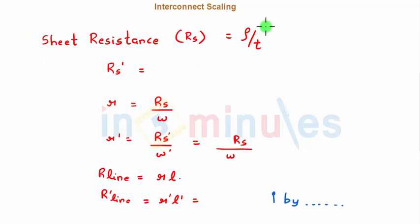Sheet resistance we know is given by rho by T. This is the resistivity which is constant, no change. T has got reduced by a factor of s.